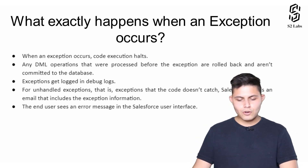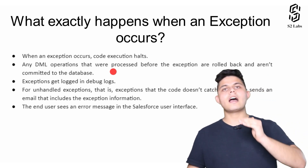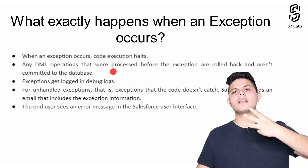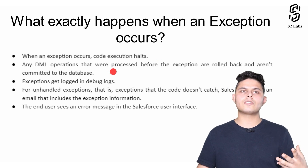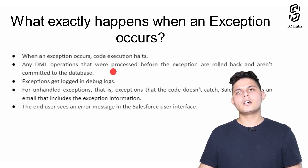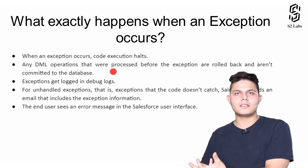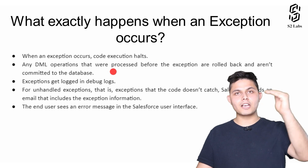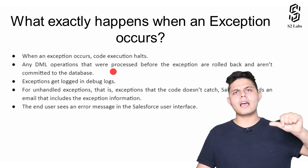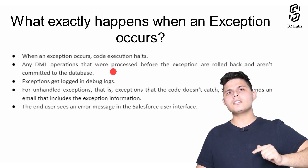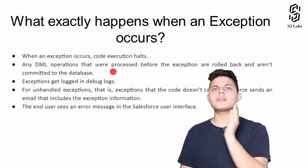Any DML operations that were processed before the exception are rolled back and aren't committed to the database. For example, let's say there are a hundred lines and we have already executed 50 lines, with three DML operations — an insert, an update, and another insert on another object. If on the 51st line an exception occurs, all of those DML operations will get rolled back and nothing will be committed to the database.